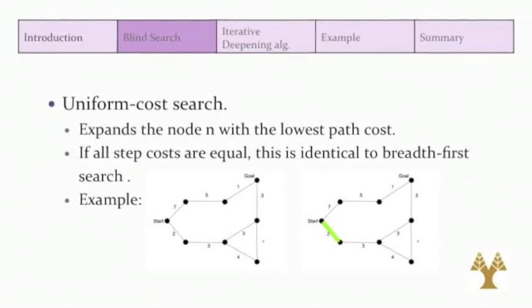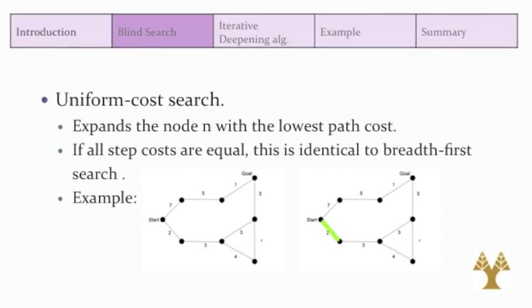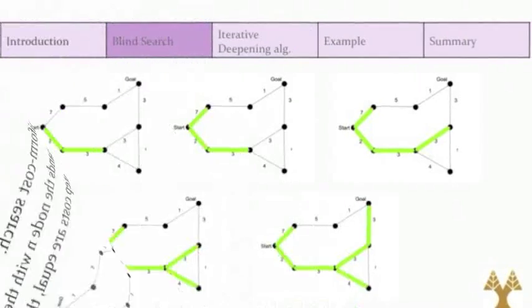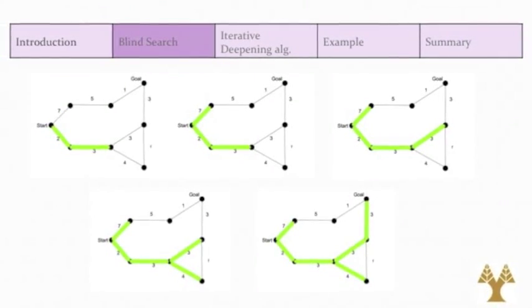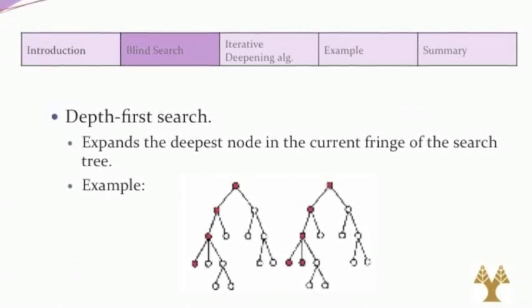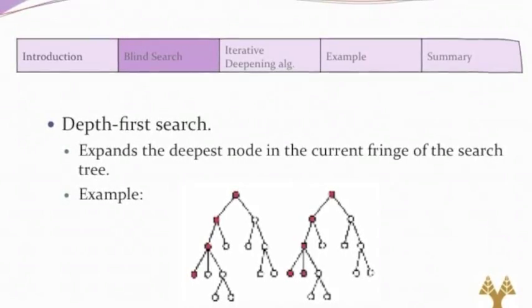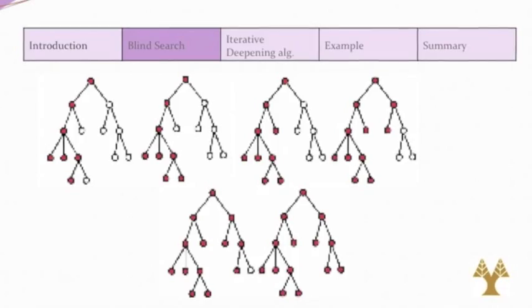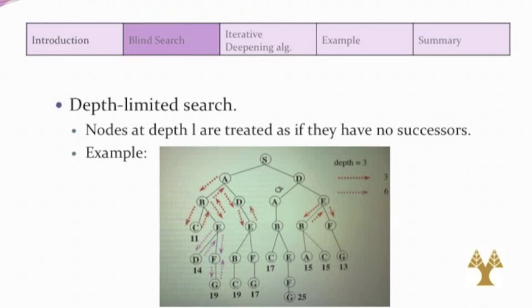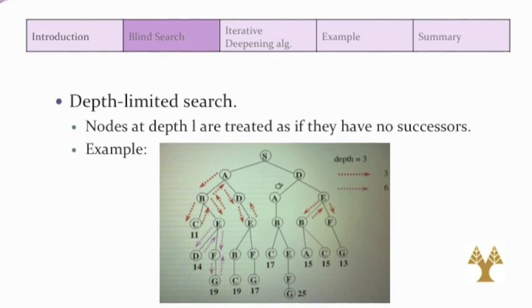Uniform cost search expands the node with the lowest path cost. Note that if all step costs are equal, this is identical to breadth first search. Depth first search always expands the deepest node in the current fringe of the search tree. Depth limited search treats nodes at the depth limit as if they have no successors. Here we see an example.